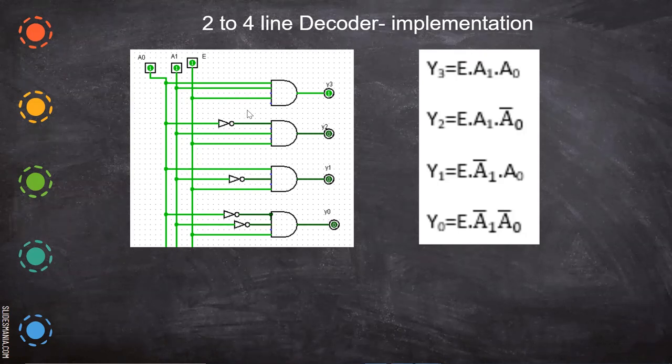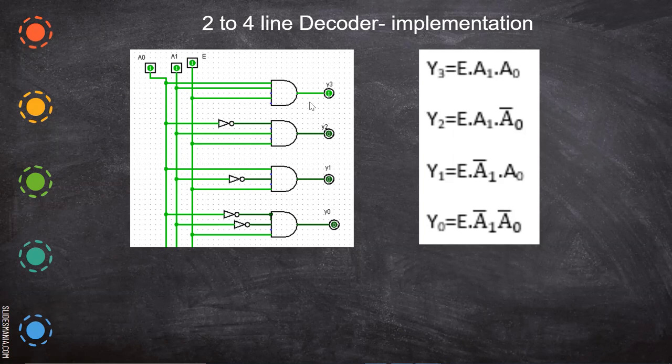Here, we give this and how we have formed this circuit is, see if it is Y3. See here, I have pasted this equation here. Y0 means E into A1 bar A0 bar. So here we have given the NOT gate. Using the NOT gate, we have given the connection. So this equation is exactly implemented here. So for Y1, here A1 bar and A0 is directly given and E is always given for all. Then only it will work. If this is 0, whatever may be the input, everything will have 0.